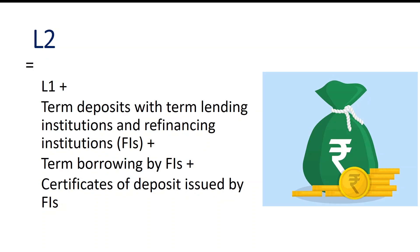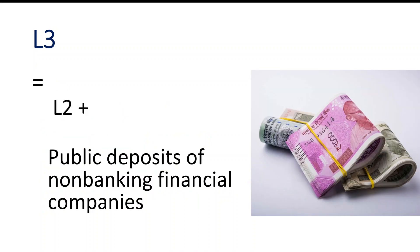L2 equals L1 plus term deposits with term lending institutions and financing institutions, plus term borrowing by financial institutions, plus certificates of deposit issued by financing institutions. L3 equals L2 plus public deposits of non-banking financial companies.